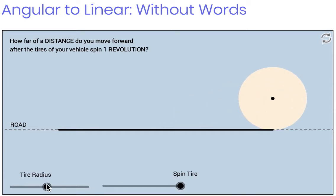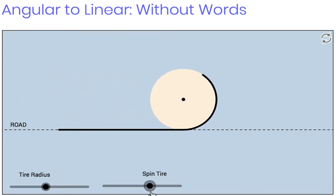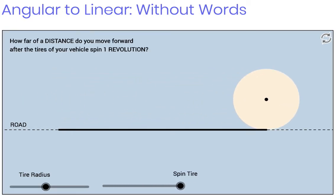But if you make the tire bigger, then when the wheel spins once, you move forward a greater distance. Students need to make that connection. That's the connecting link between angular velocity and linear velocity.